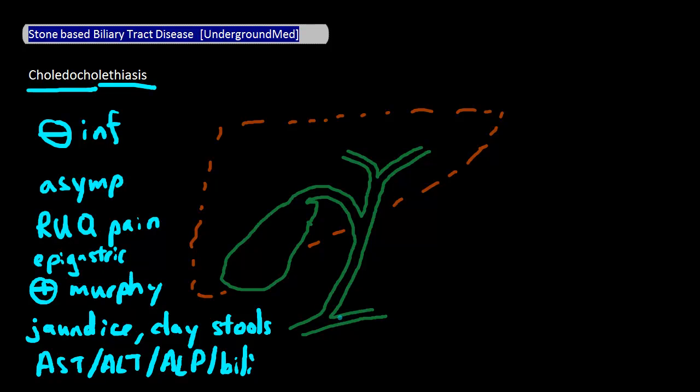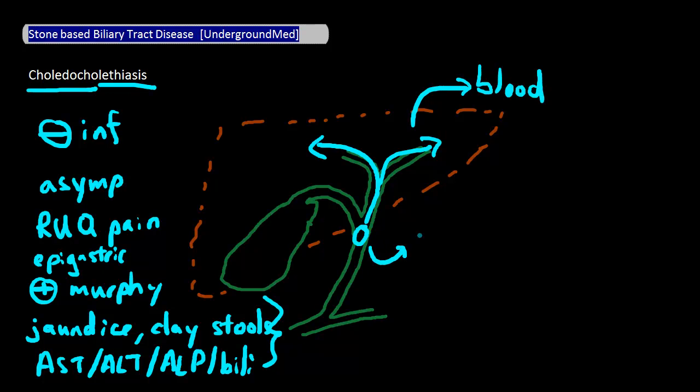An easy way to remember all this is that these symptoms have to do with a stone blocking the common bile duct. In doing so, the bile can back up into the liver, causing liver damage. It can also get into the blood from there. The elevated ALP level is a pretty good sign of damage to the common bile duct. The clay-colored stools are because stool normally gets its color from bile, so if the bile is blocked from getting into the intestines, then your stools will have decreased coloration.